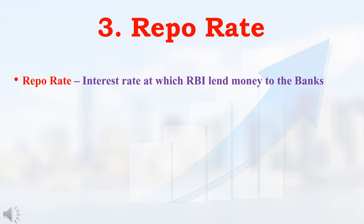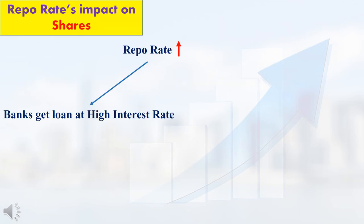The next parameter is repo rate. Usually people get loans from banks; like that, banks get loans from RBI. The interest rate at which the bank gets a loan from RBI is nothing but the repo rate. Suppose RBI increases the repo rate — if RBI increases the repo rate, then the bank will get loans from RBI at a high interest rate, so the bank will also give loans to people at a high interest rate, because the bank got the loan at a high interest rate.